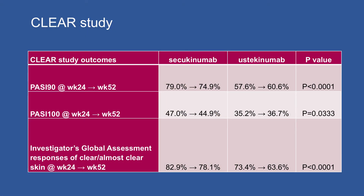The CLEAR study compared secukinumab head-to-head against ustekinumab for skin. In the dermatology world there's debate about which cytokine therapy to choose when joints are equally managed. The CLEAR study shows secukinumab has some improvement in skin clearance over ustekinumab. If you have a patient with more recalcitrant skin disease, these data may become important.